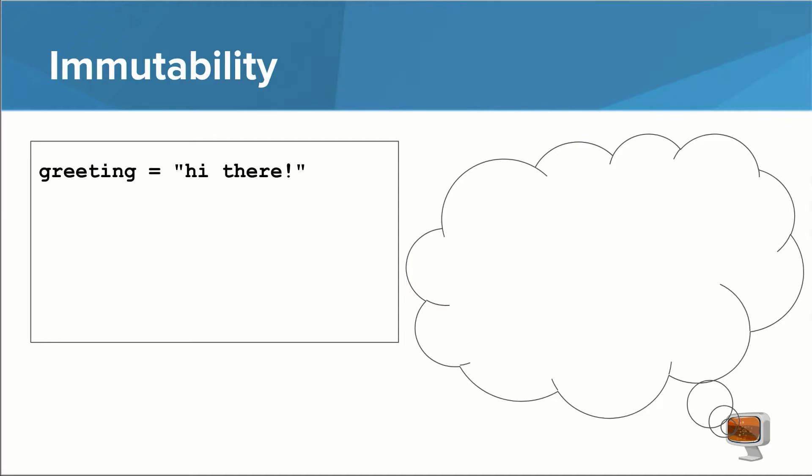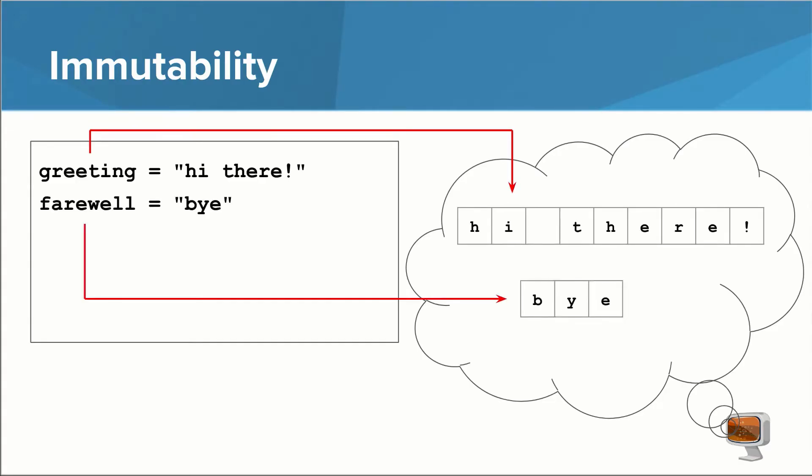To help you understand this, let's see what happens in your computer's memory when you do different things with strings. When you make a new string, the computer remembers that the identifier greeting corresponds to this particular sequence of characters that spells out hi there. You can make more strings, and the computer will keep track of them for you.